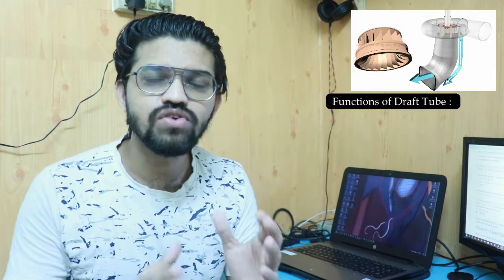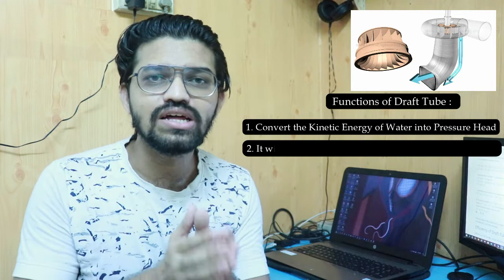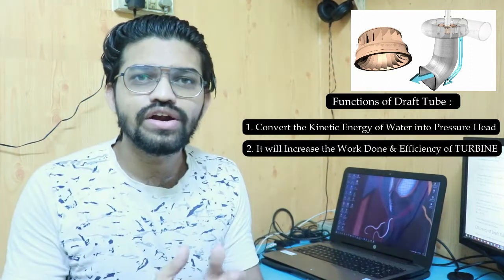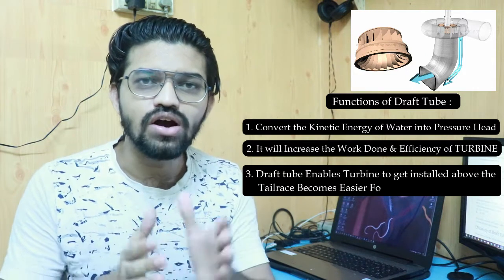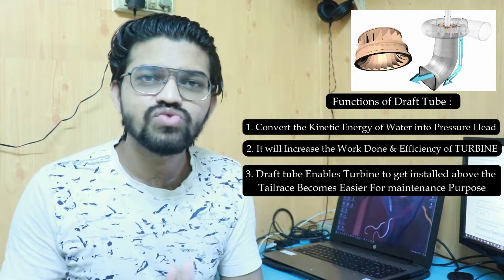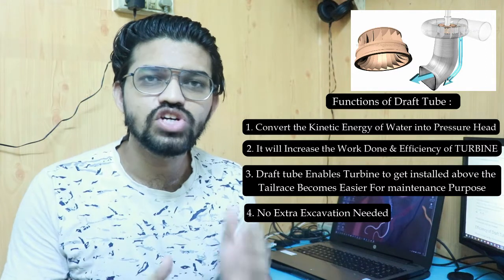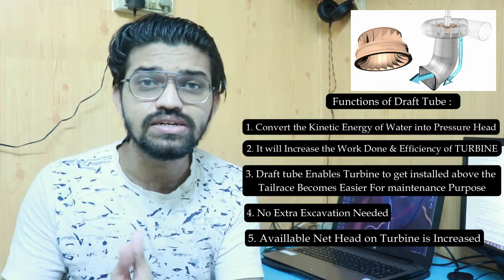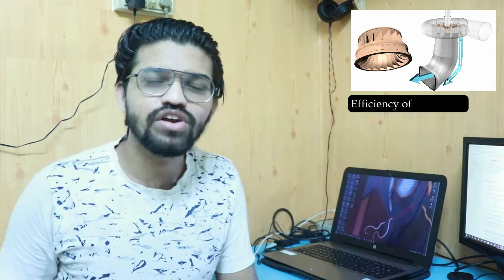The draft tube has different functions. First, it converts the available kinetic energy of the water into pressure head. It also increases the efficiency of the turbine and the total overall work done on the turbine. The draft tube enables the Francis turbine or reaction turbine to be installed above the tail race, which makes maintenance and repair easier, and no extra excavation is needed. Also, the available net head on the turbine is increased because of the draft tube.